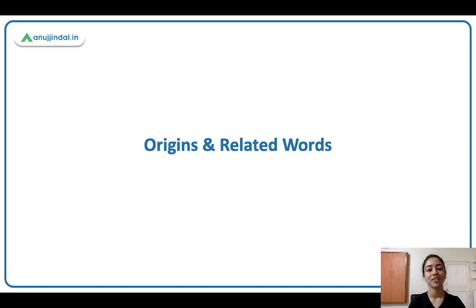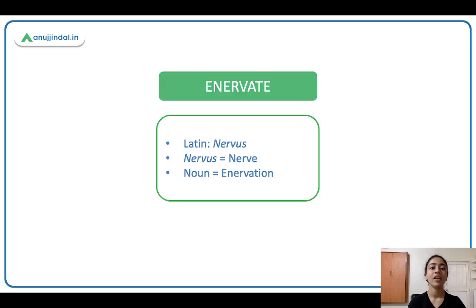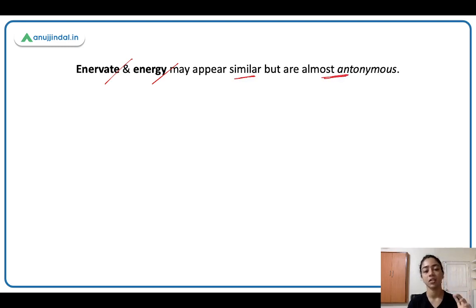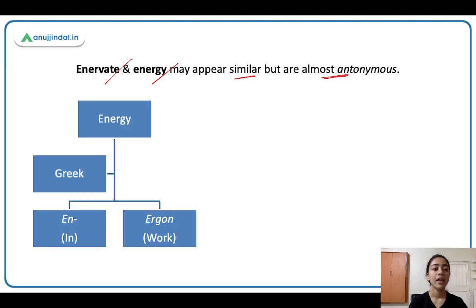Now let's understand the origins and related words. Enervate comes from Latin nervus, which means nerve, and the noun is enervation. Enervate and energy — yeh dono similar lagte hain but are almost antonymous, almost opposite meanings hain. Energy comes from Greek: 'en' meaning in, and 'argon' meaning work.